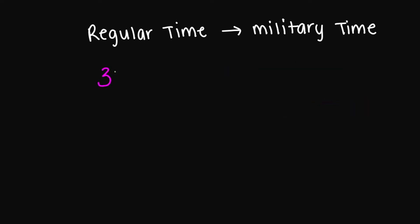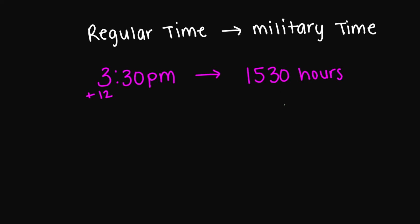So if I gave you the time 3:30 p.m. and I'm going from regular time to military time, I'm going to add 12 to the hour number. This is going to be 1530 hours. Or you write it with a colon, it's going to be 15:30 hours.